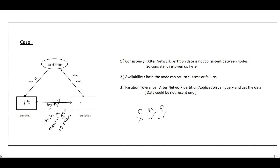So in Case 1, consistency is given up because after the network partition, data is not consistent between nodes. Availability is maintained because both nodes can return data — either success, failure, or older data. Partition tolerance is maintained because even after the network breaks down between the two DB nodes, the application can still query and get data. So in Case 1, we achieve availability and partition tolerance by giving up consistency.